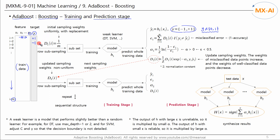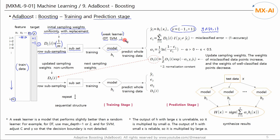In the first iteration, row subsampling is performed. Initially, the sampling weights D are set to 1/m, meaning a uniform distribution. Row subsampling is performed with replacement to create a subset. Next, we create a model to train on this subset — this model is a weak learner. Decision trees, support vector machines, etc. can be used. If using decision trees, set the depth to 1 or 2 to create a weak learner.